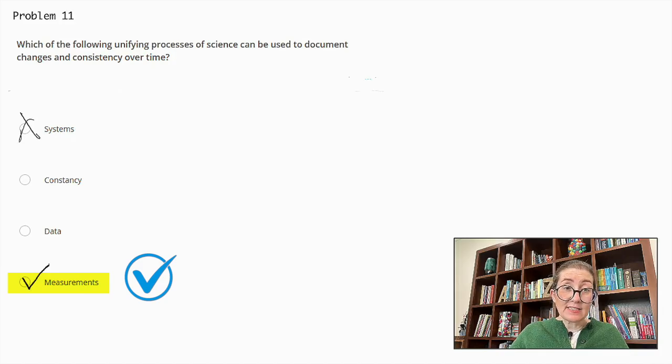Why are the other answers not correct? Systems refer to interconnected components but don't specifically document changes over time. Constancy identifies elements that remain the same, not changes over time. Data is collected information but measurements give it meaning for tracking changes and consistency. Therefore, measurements are the unifying process of science that can be used to document changes and consistency over time.